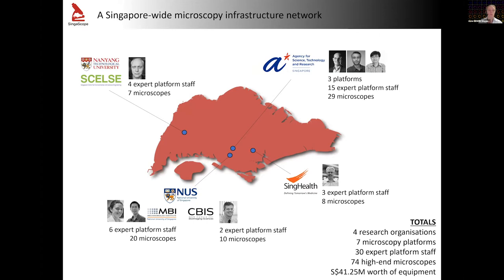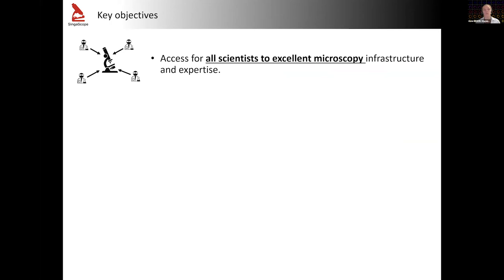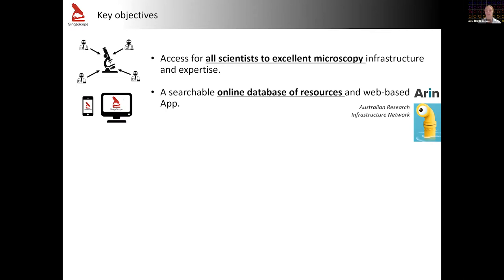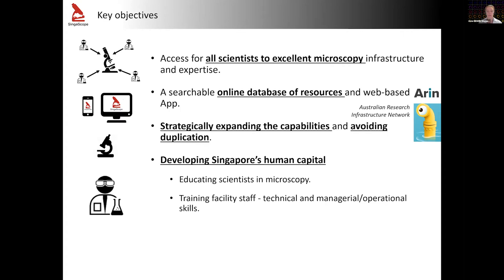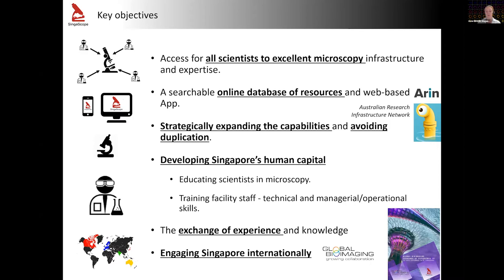The key objective of our network in the microscopy field is to give access for all scientists to excellent microscopy infrastructure and expertise. Also, based on what has been already developed in Australia, to develop a searchable online database of resources and to strategically expand capabilities — particularly to avoid any duplication in terms of equipment — and to develop human capital in terms of educating scientists and training facility staff. And of course, for all of that, we need the global bioimaging network. It's very important for us to have a voice in that and to be able to exchange experience and knowledge and to place Singapore internationally.